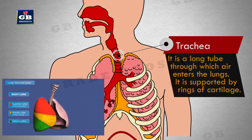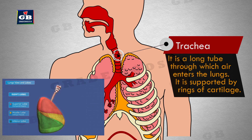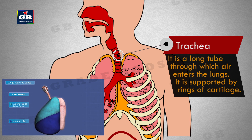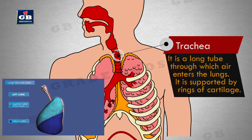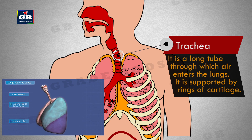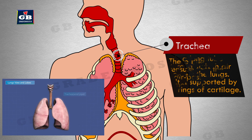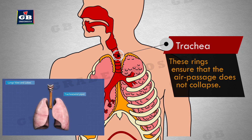Trachea: it is a long tube through which air enters the lungs. It is supported by rings of cartilage. These rings ensure that the air passage does not collapse.